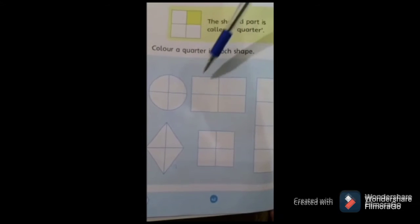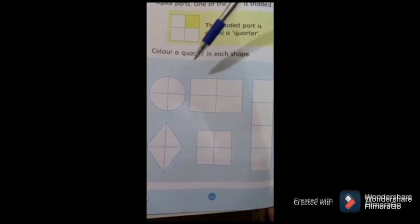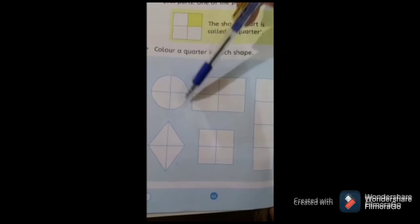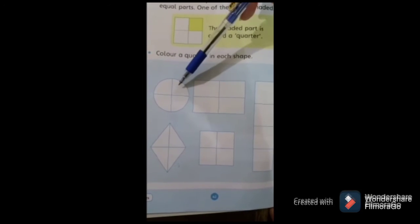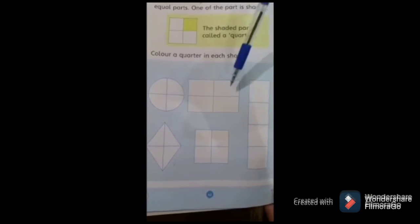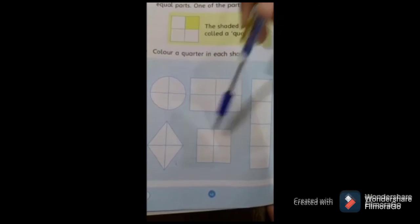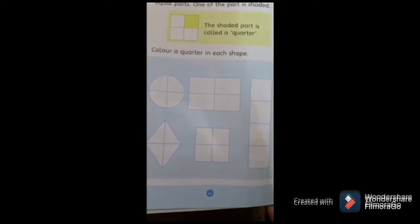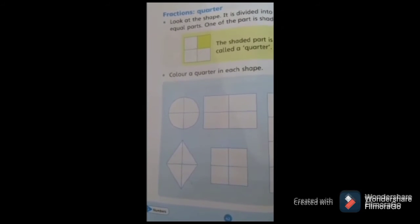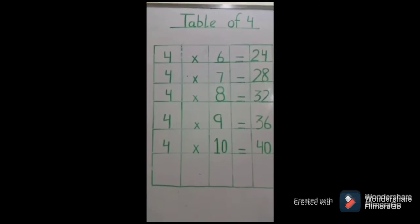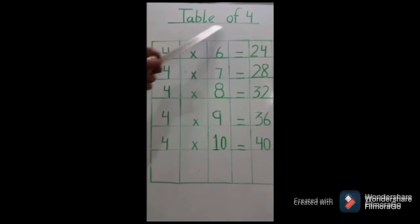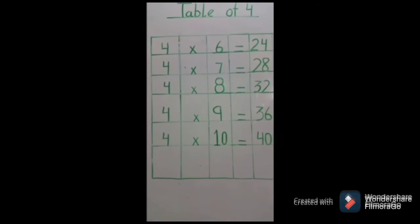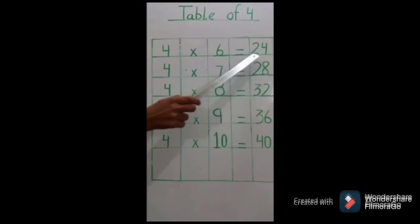Color a quarter in each shape. Shape di, one quarter mein aapne shade kar dena hai. Koi bhi part shade kar dena hai. Leki quarter kya hai? Shape ka ek part mein aapne pass mein hua part isse jo.